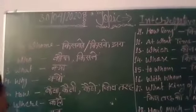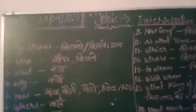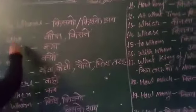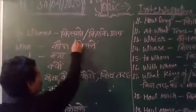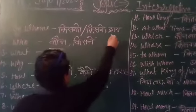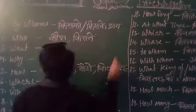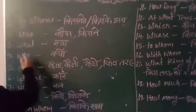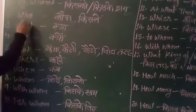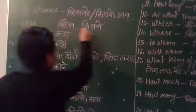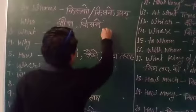First of all, the Interrogative Word 'Whom' — 'Whom' means in Hindi: Kisko, Kiski. Then the second word is 'Who' — 'Who' means Kaun, Kislin.